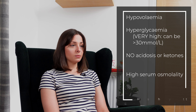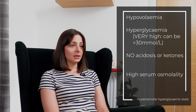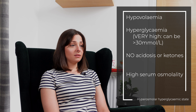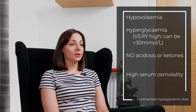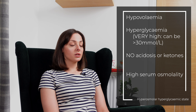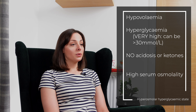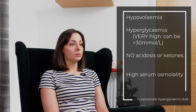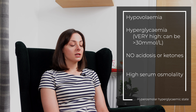Generally, the signs of a hyperosmolar hyperglycemic state are hypovolaemia, significant hyperglycemia — often with a glucose above 30 millimoles per litre — but without evidence of acidosis or ketone production, and a raised serum osmolality.